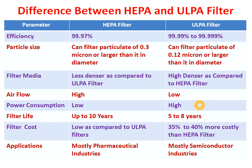Now for filter life: the HEPA filter life is up to 10 years, whereas the ULPA filter life is five to eight years. That means the HEPA filter has a longer life compared to the ULPA filter.